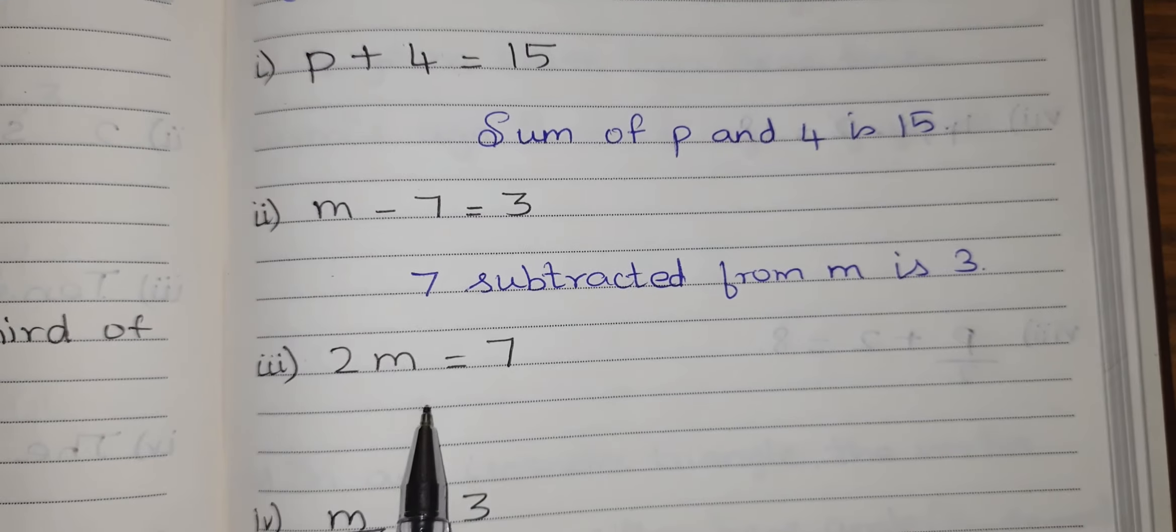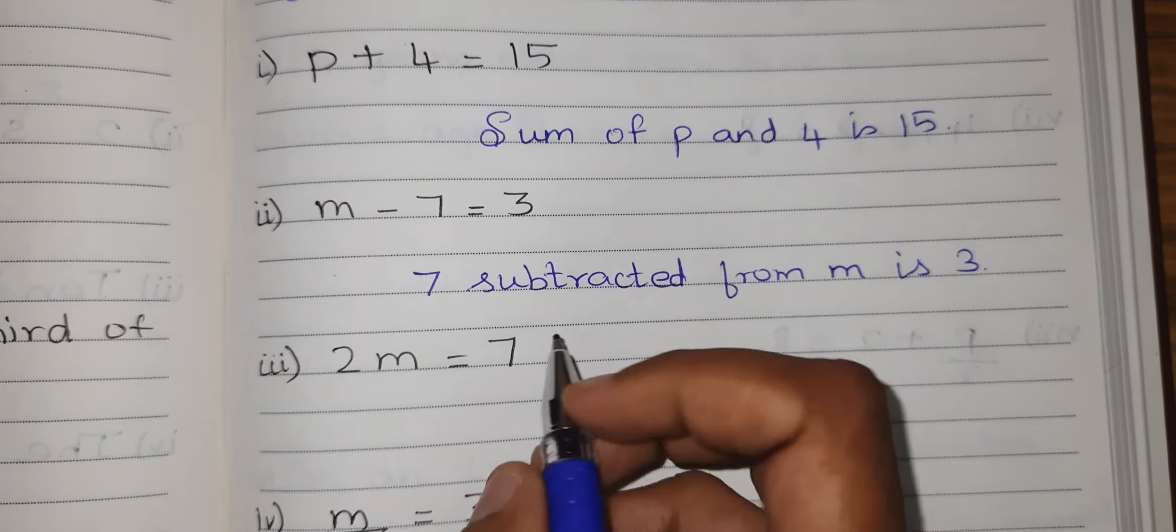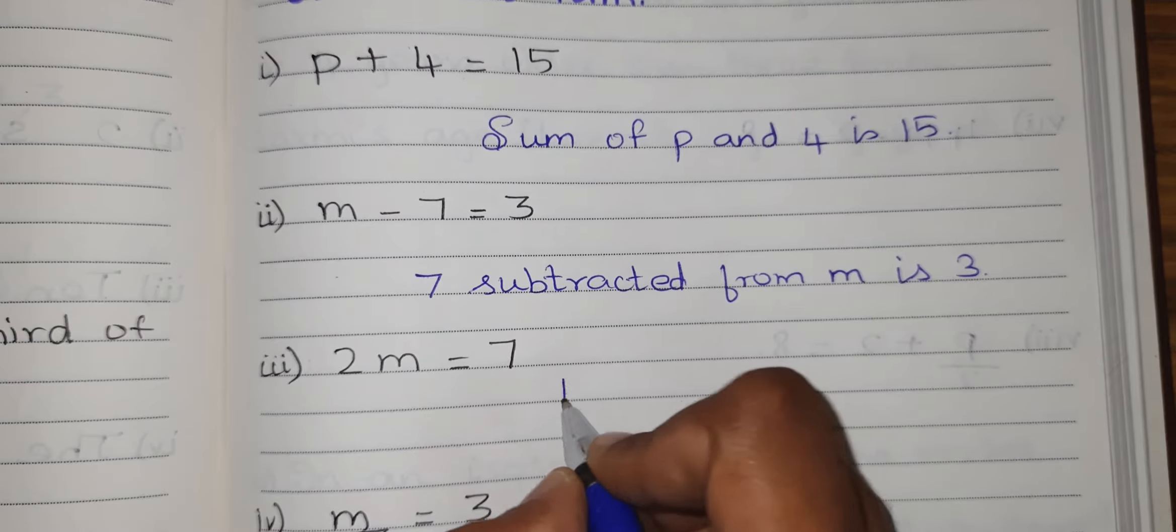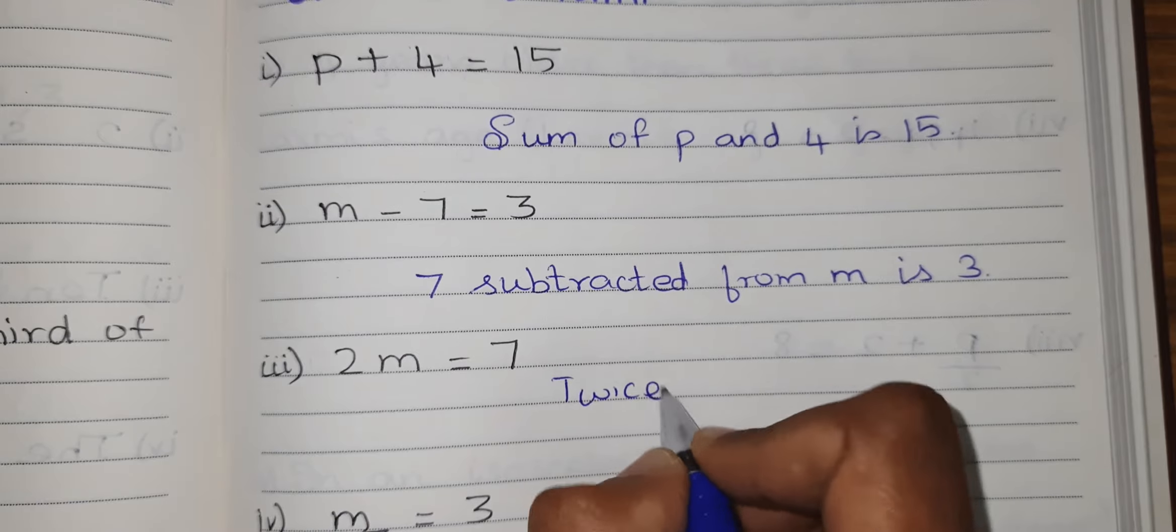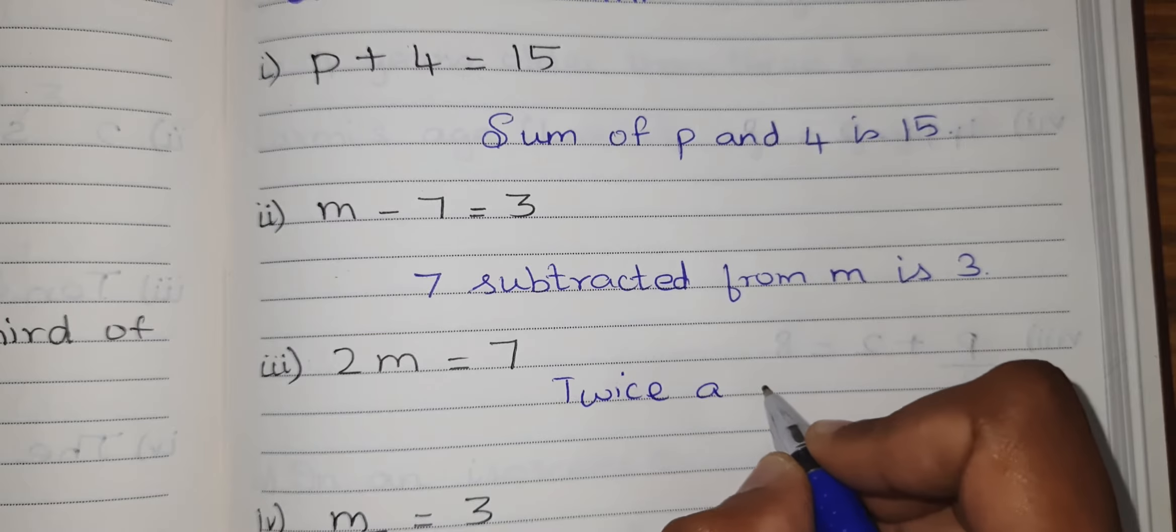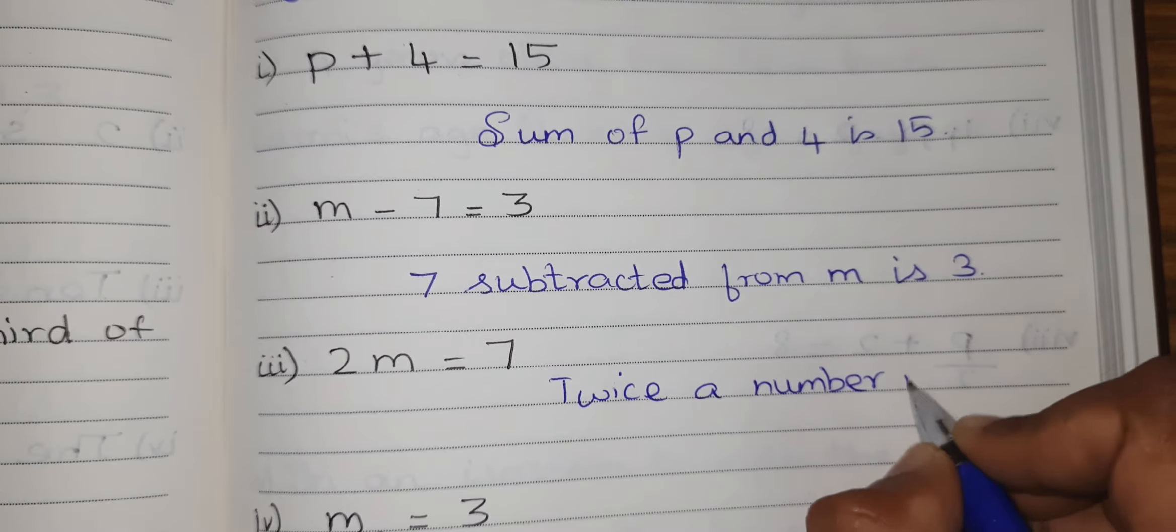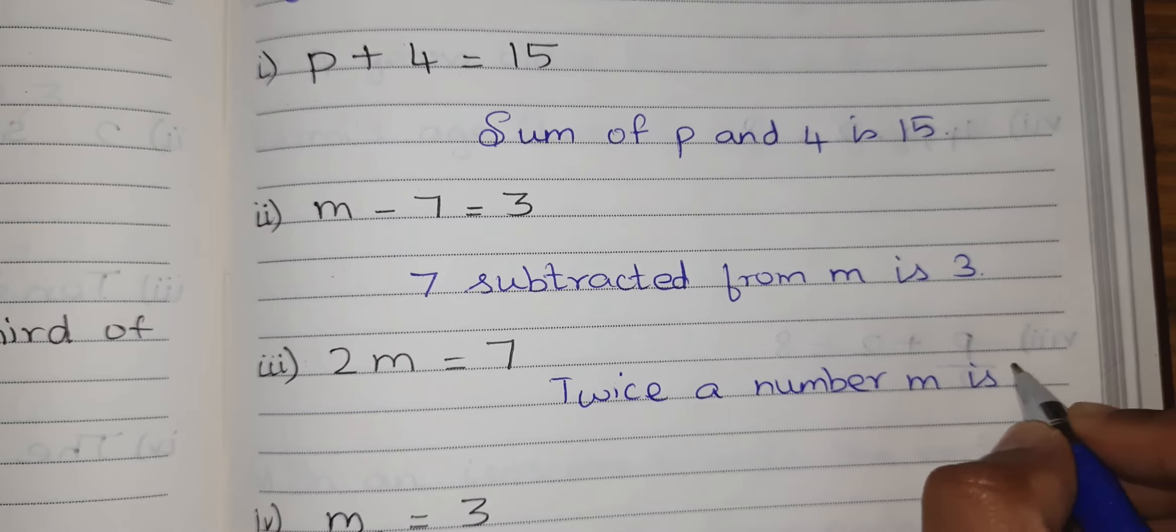2m equal to 7. It means 2m means twice a number. So twice a number m is 7.